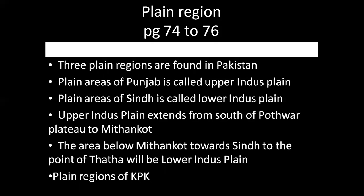Plain regions are covered on page number 74 to 76. In chapter 3, starting at page 61, the plain regions heading is introduced. The area of Punjab is called the Upper Indus Plain, while the plain areas of Sindh are called the Lower Indus Plains. We will discuss both of them, along with the plain regions of KPK and Balochistan.